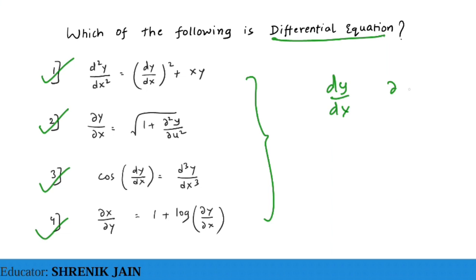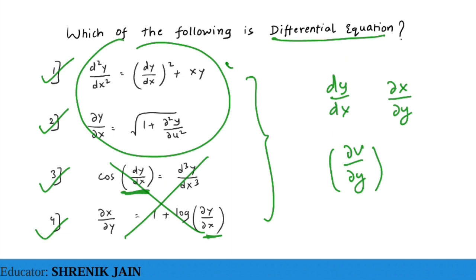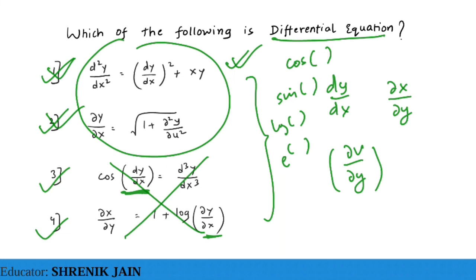The key rule is that dy/dx, ∂x/∂y, or ∂v/∂y must be independent — they cannot be treated as a variable. If dy/dx appears inside a function like cos(dy/dx) or log(dy/dx), it is NOT a differential equation. Only equations where no such wrapping function exists qualify as differential equations.